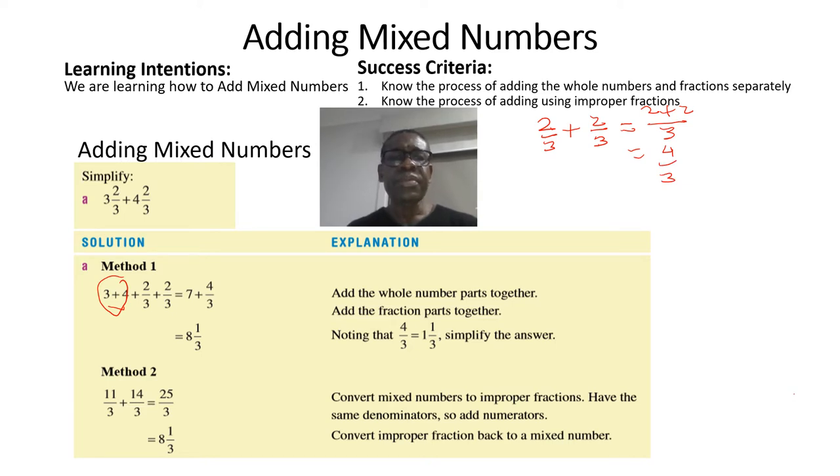Now as you know, 4/3 is the same as 1 1/3. So 1 adds to the 7, gives us 8. So 8 1/3 is our final answer.